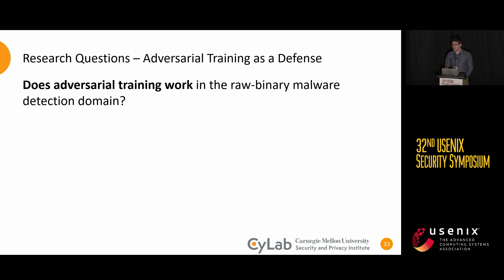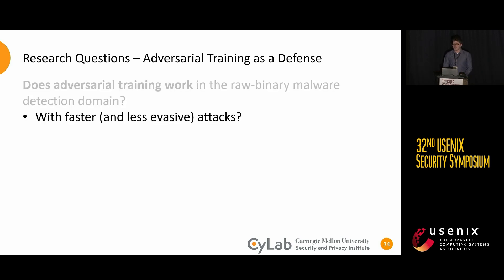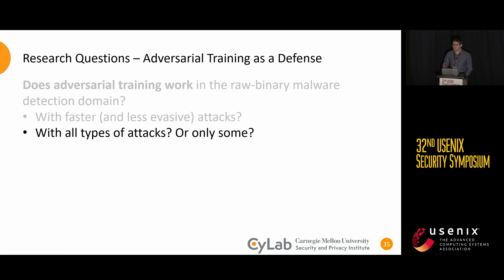In these experiments, we had a few key questions. First, does adversarial training work in the raw binary detection domain? And if it does, can we train with less-optimized attacks and still be robust to the more optimized original attacks? We also wanted to see whether adversarial training works with some of these attack types, all of them, or just some.